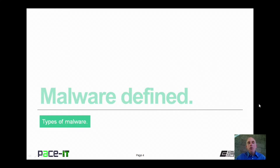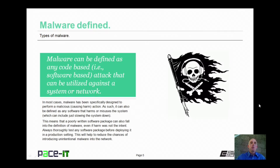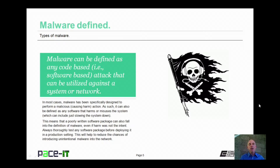I'm going to begin with malware defined. Malware can be defined as any code-based attack that can be utilized against a system or network. In most cases, malware has been specifically designed to perform a malicious action — that is, it's been designed to cause harm. It can also be defined as any software that harms or misuses the system, which can include just slowing the system down.